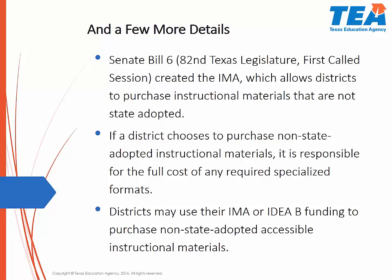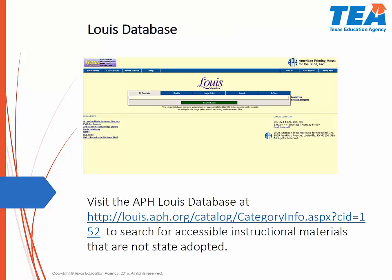Examples of books that districts may adopt that are not considered state-adopted would be Spanish books that are no longer in adoption or advanced placement materials which are no longer state-adopted. If you need a book in any of the formats and it is not an in-adoption book, check the Lewis database. Examples would be atlases for social studies or advanced placement books. You can search all formats by ISBN or title, and the search will provide a list of books, the price, and where you may purchase them using a disbursement with IMA funds. If you are using IDEA Part B funds, it would be a different process and you would need to check with your special education department.